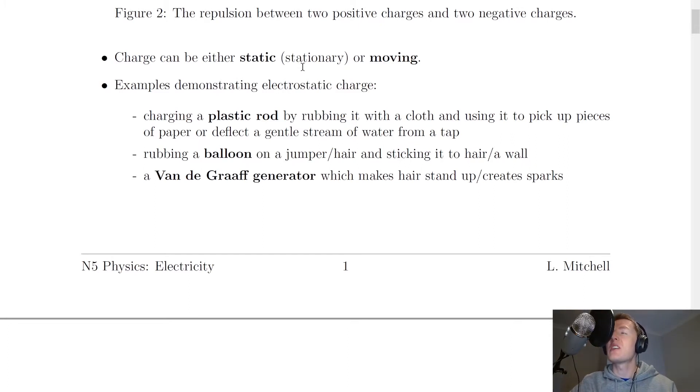So what we mean by static charge or static electricity is where we have charge building up on the surface of an object, rather than charge moving in a circuit. Some examples demonstrating electrostatic charge include charging a plastic rod by rubbing it with a cloth and using it to pick up pieces of paper or deflect a gentle stream of water from a tap. You might also rub a balloon on a jumper or your hair and stick it to a wall.